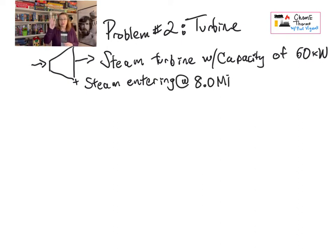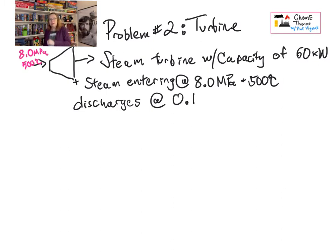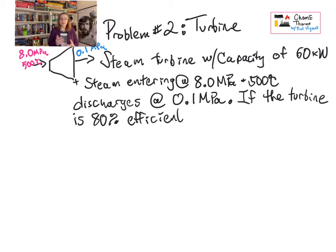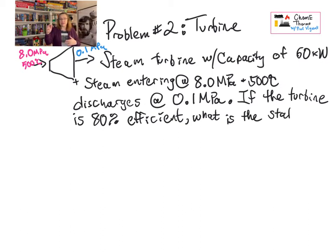Concentrate on the entering temperature and pressure: 8 megapascals, 500 degrees C. The steam discharges out the other end of the turbine at 0.1 megapascal, about atmospheric pressure. In real life a turbine like this would not be a single unit — it would probably be several turbines in series, because this is a huge pressure change. If this turbine is 80% efficient, I want to know the full description of the outlet steam conditions, and also what steam flow rate is needed to achieve 60 kilowatts.